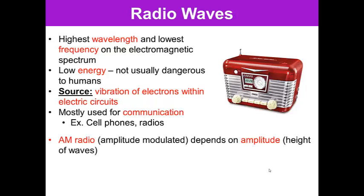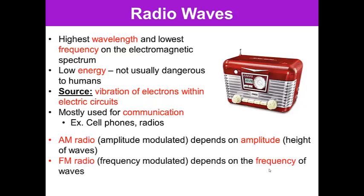AM radio stands for amplitude modulated, and it depends on the amplitude or the height of the waves. So that's what amplitude means is height. FM radio means frequency modulated, and it depends on the frequency of the radio waves. So how fast they come.